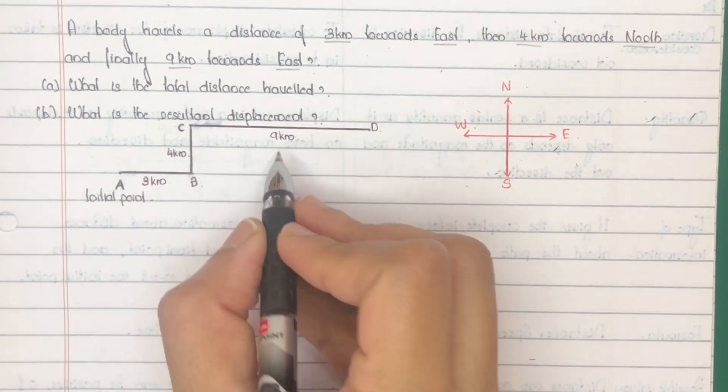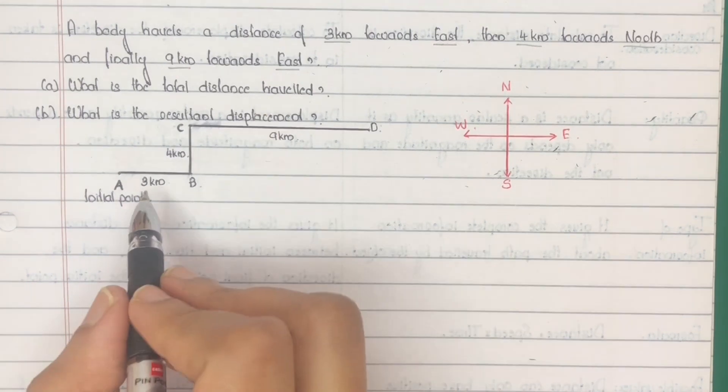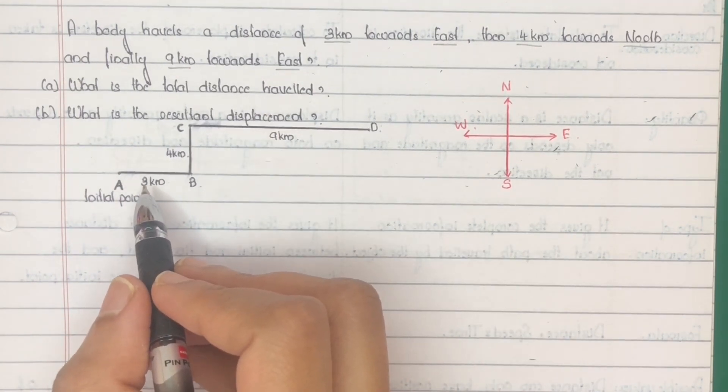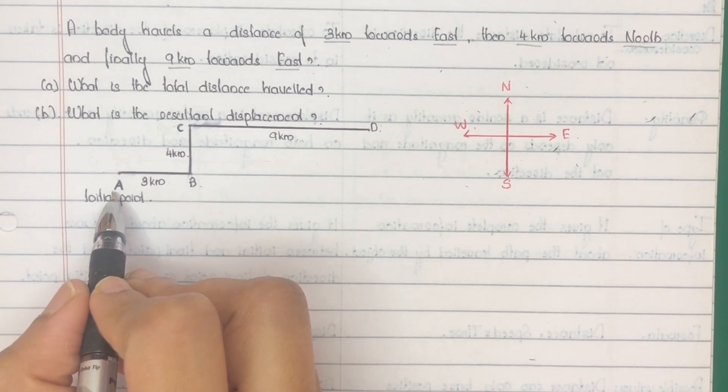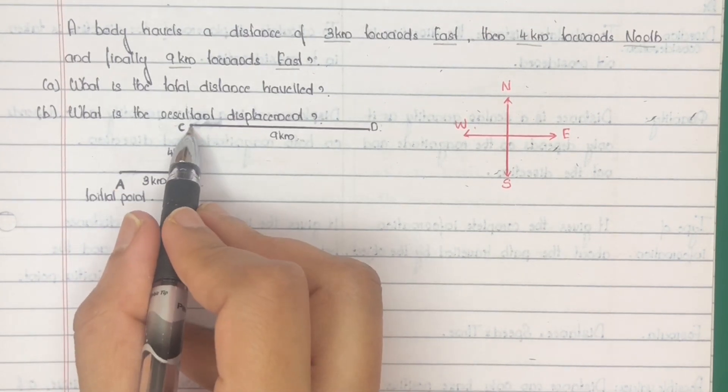Now first question, what is the total distance traveled? Distance is the actual length of the path covered by the body. Here the body starts its journey from A, then A to B, then B to C and C to D.